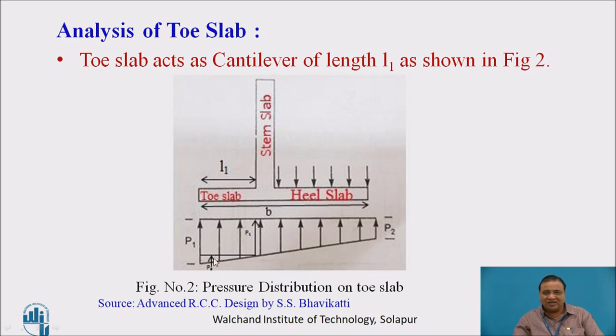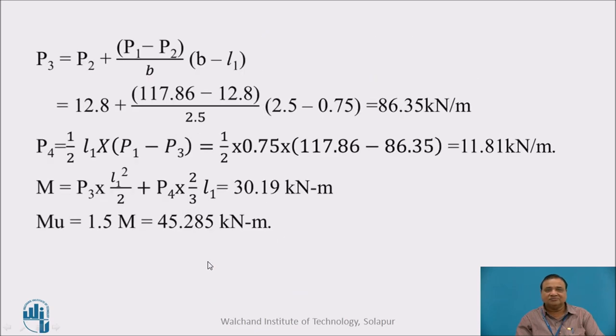P4 is the triangular load. P4 is half L1 into this particular ordinate, which is half L1 into P1 minus P3. That works out to be 11.81 kilonewton per meter.